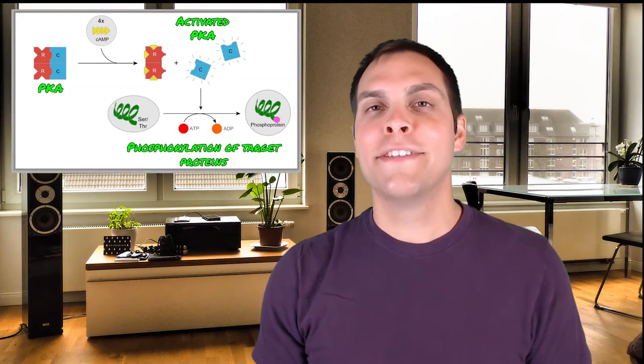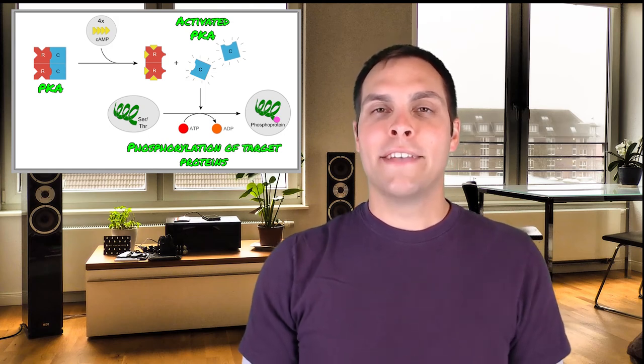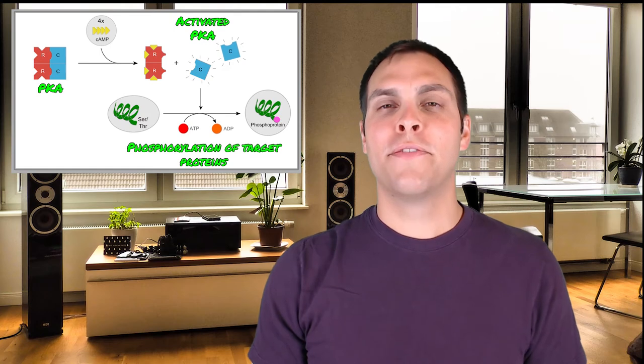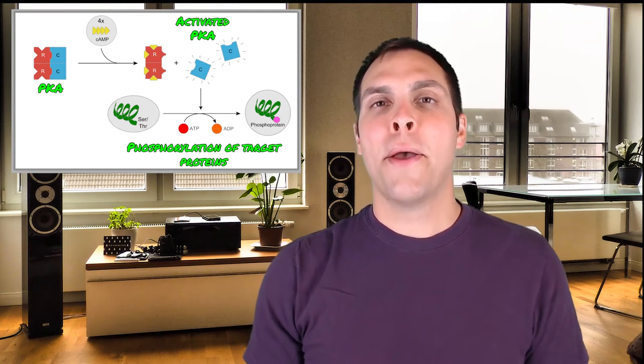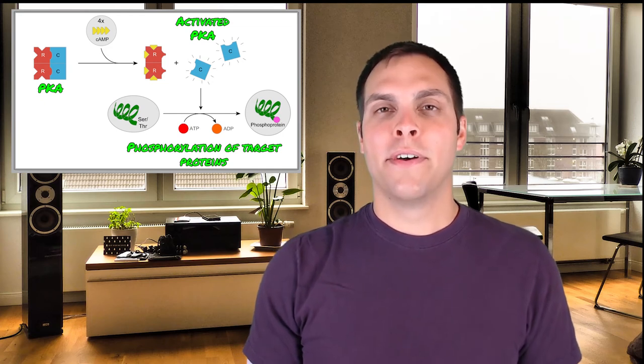One type of second messenger commonly used in cells is cyclic AMP. AMP — adenosine monophosphate — is what you get when ATP loses two of its phosphates. In certain conditions, such as cells experiencing low energy status, some ATP will interact with an enzyme called adenylyl cyclase, which converts ATP by removing two phosphates and converting it into cyclic AMP. Cyclic AMP most commonly interacts with an enzyme called PKA, or protein kinase A, which is a kinase that adds phosphate groups to influence the activity of a host of different target proteins, allowing it to influence a broad range of cellular behaviors.